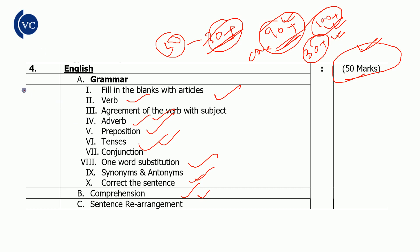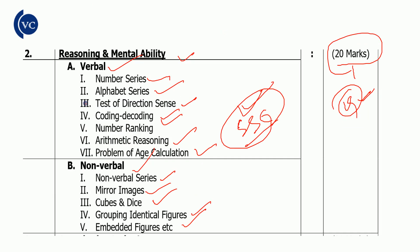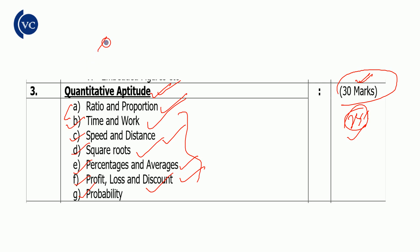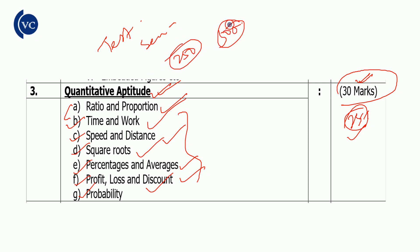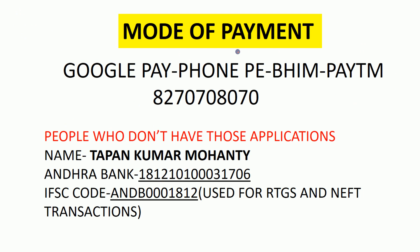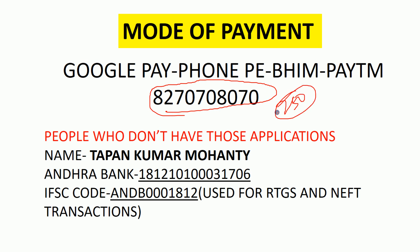We should revise all these chapters thoroughly. We have 1500 test series available. If you purchase the test series at 250 rupees, you will get full access. Contact the number 8270708070 to purchase and make the payment.